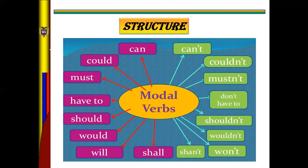In the affirmative, modal verbs follow that structure. In the negative form, it is possible to say: can't, couldn't, mustn't, don't have to, shouldn't, wouldn't, and won't. Please take into account this information about modal verbs.